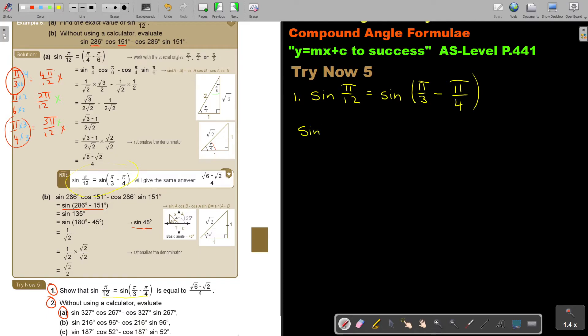So this is going to be sin the first one, cos the second one, minus cos the first one, sin the second one. And now, I'm just going to work with my special triangles, just like I did in the previous one. So I'm going to say, this is equal to π/3, sin, it's opposite over hypotenuse. So it's going to be square root of 3 over 2. Multiply cos, remember I'm here. Cos is adjacent over hypotenuse. So multiply 1 over square root of 2 minus. Cos π/3. So cos is adjacent over hypotenuse. It's a half. Multiply sin. Sin of π/4. So sin is opposite over hypotenuse. So it's 1 over square root of 2.